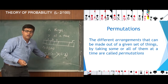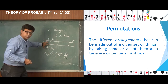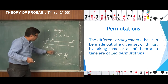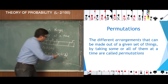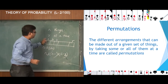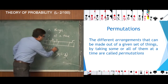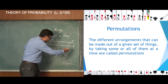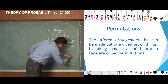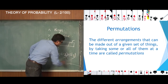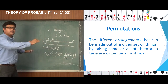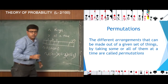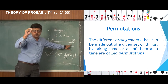The total number of ways of filling the first three boxes is n into n minus 1 into n minus 2. This continues: the fourth box can be filled in n minus 3 ways, so total for four boxes is n into n minus 1 into n minus 2 into n minus 3. This pattern continues until we reach the rth box.